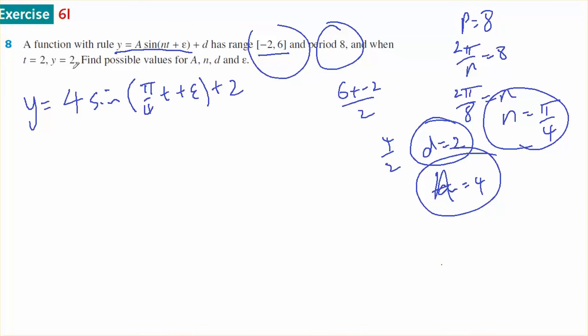When t equals 2, y equals 2. Find possible values. Because of all sorts of translations, e could be many things. However, if I substitute in, I get 2 equals 4 sine of 2 times π on 4 plus e, plus 2. The 2 goes over, so 0 equals 4 sine of π on 2 plus e. 0 over 4 is 0, so 0 equals sine of π on 2 plus e.